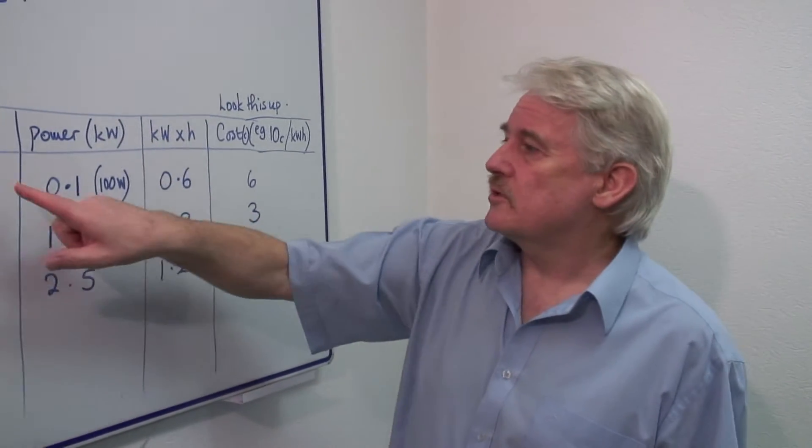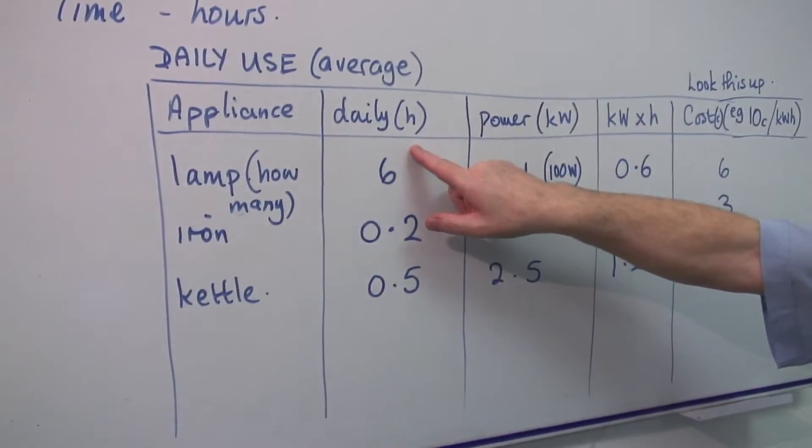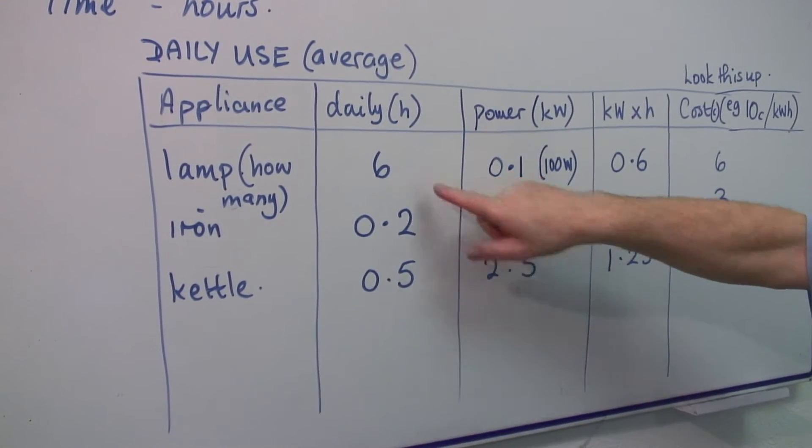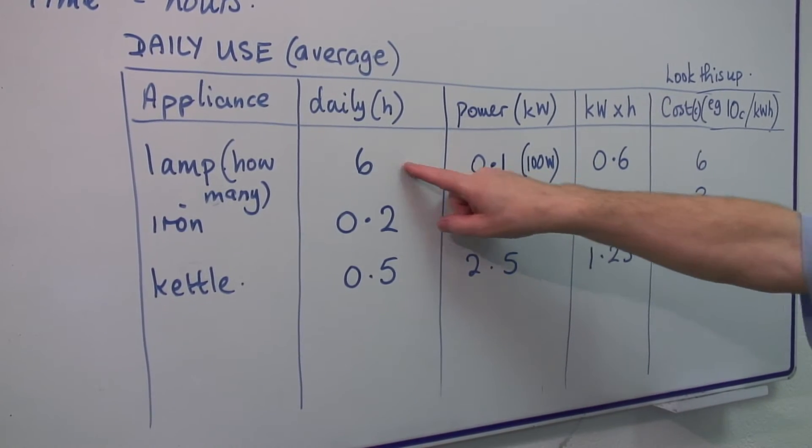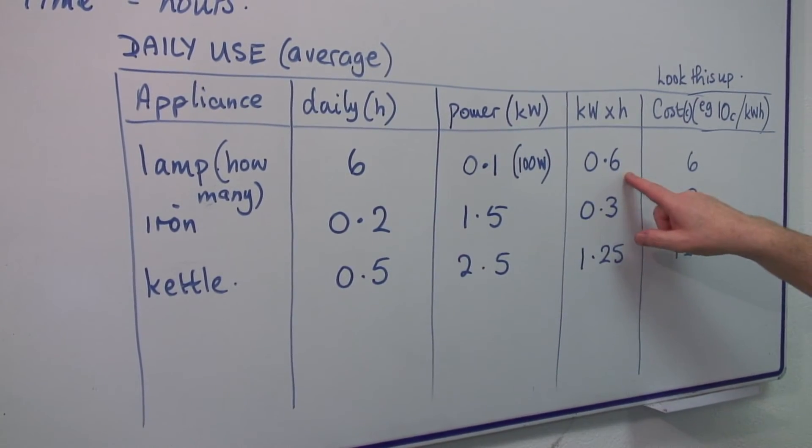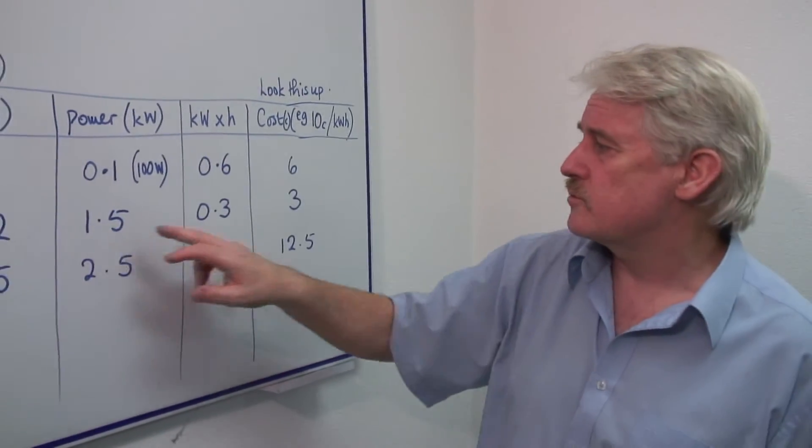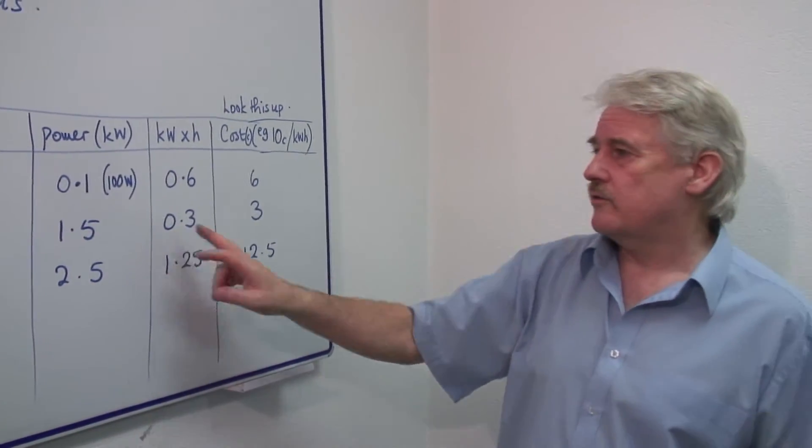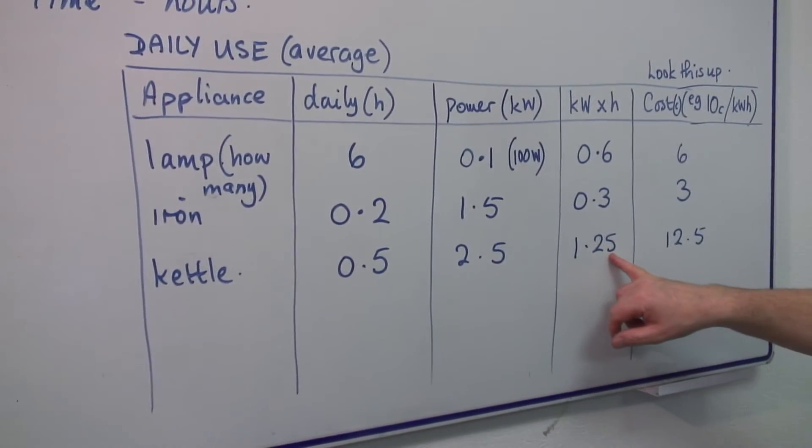What we do is we calculate by calculating the daily hour consumption, six hours for example, by the power, 0.1. Six times 0.1 is 0.6. And we do the same for each of the devices. 0.2 times 1.5 gives you 0.3. And 0.5 times 2.5 gives you 1.25.